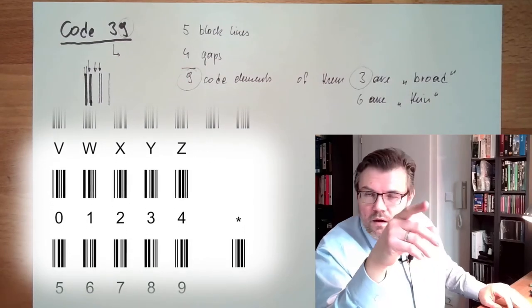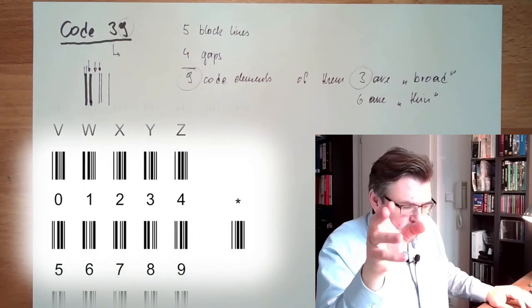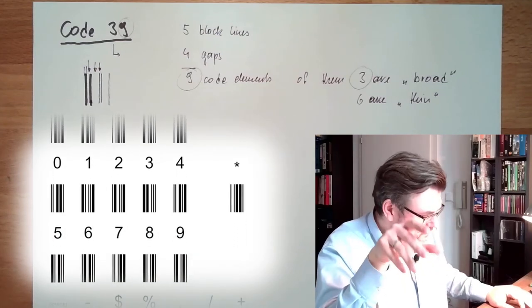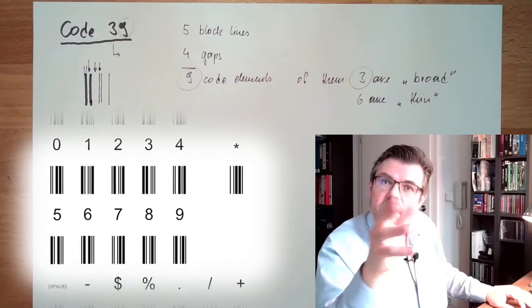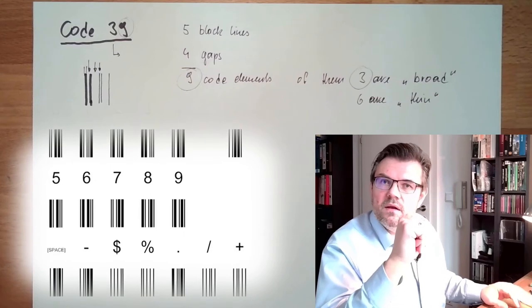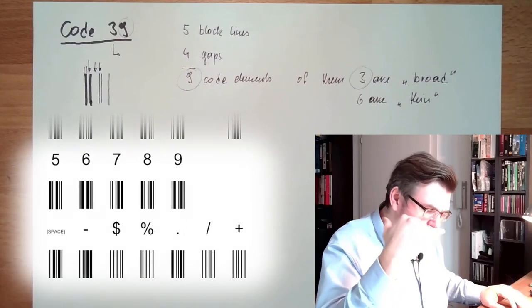On Wikipedia you can find examples of how they look like. I will also place them in the video. There's an alphabet - this is your alphabet of Code 39, with this you have to live.